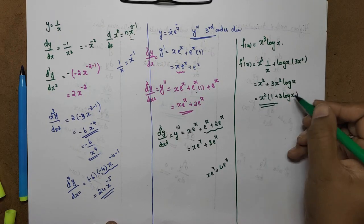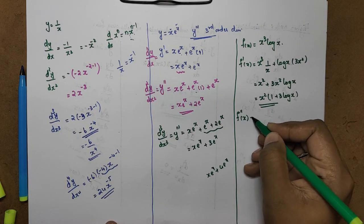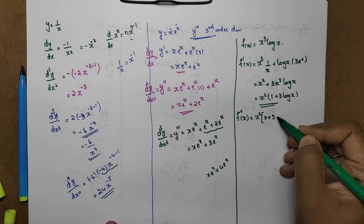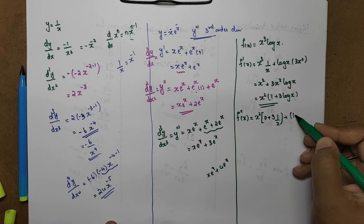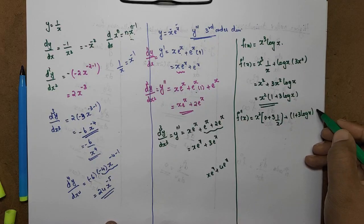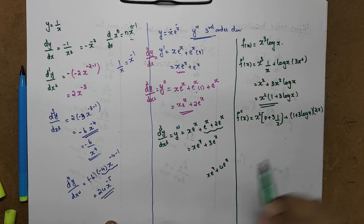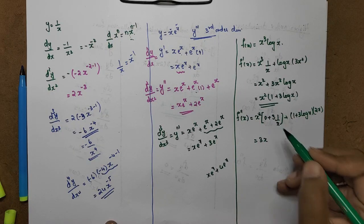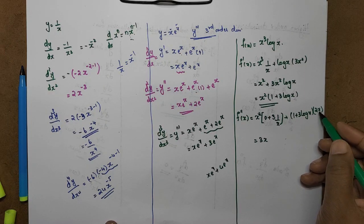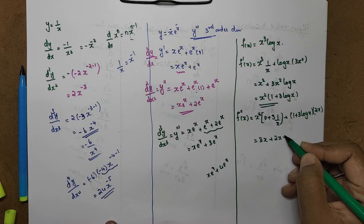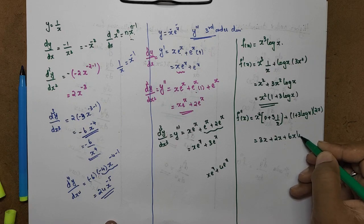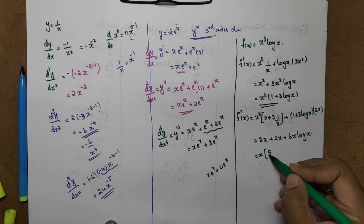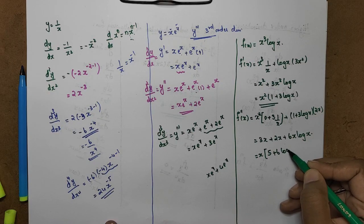So f'(x) = x² + 3x² log x = x²(1 + 3 log x). For the second derivative f''(x): using the product rule on x²(1 + 3 log x). First function x² into derivative of (1 + 3 log x): derivative of 1 is 0, derivative of 3 log x is 3/x. Plus second function (1 + 3 log x) into derivative of x² is 2x. This gives x²·(3/x) + 2x(1 + 3 log x) = 3x + 2x + 6x log x = 5x + 6x log x.